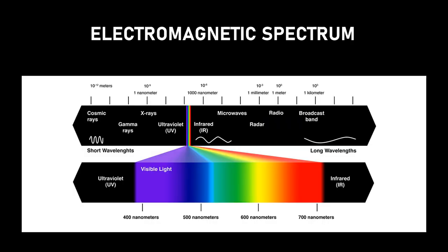Whenever someone talks about astronomy, there is always a mention of the electromagnetic spectrum. The optical region of the electromagnetic spectrum is basically what our eyes can see — a very narrow band ranging from approximately 400 nanometers to 700 nanometers — and for the majority of human history, that is all we had.